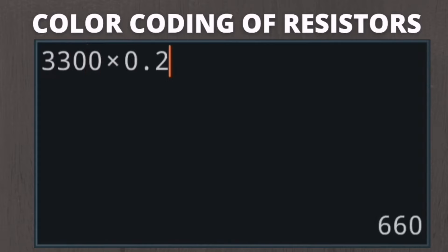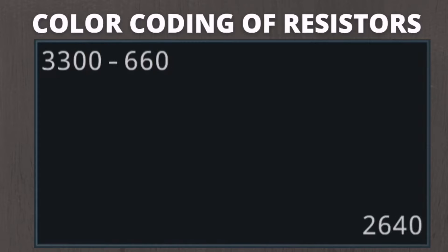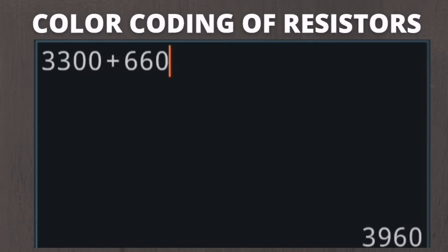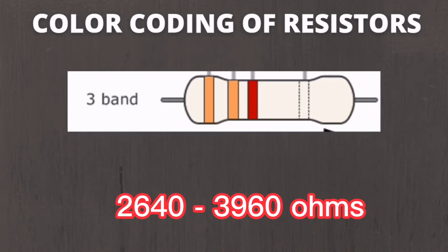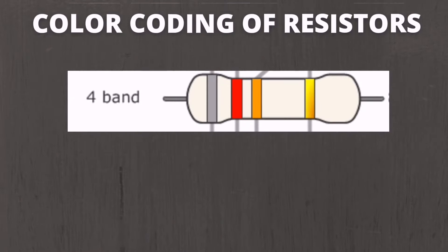By computation, 20% of 3300 is 660. So we have 3300 minus 660 equals 2640, and 3300 plus 660 equals 3960. The range of the ohmic value of the resistor will be 2640 up to 3960 ohms.